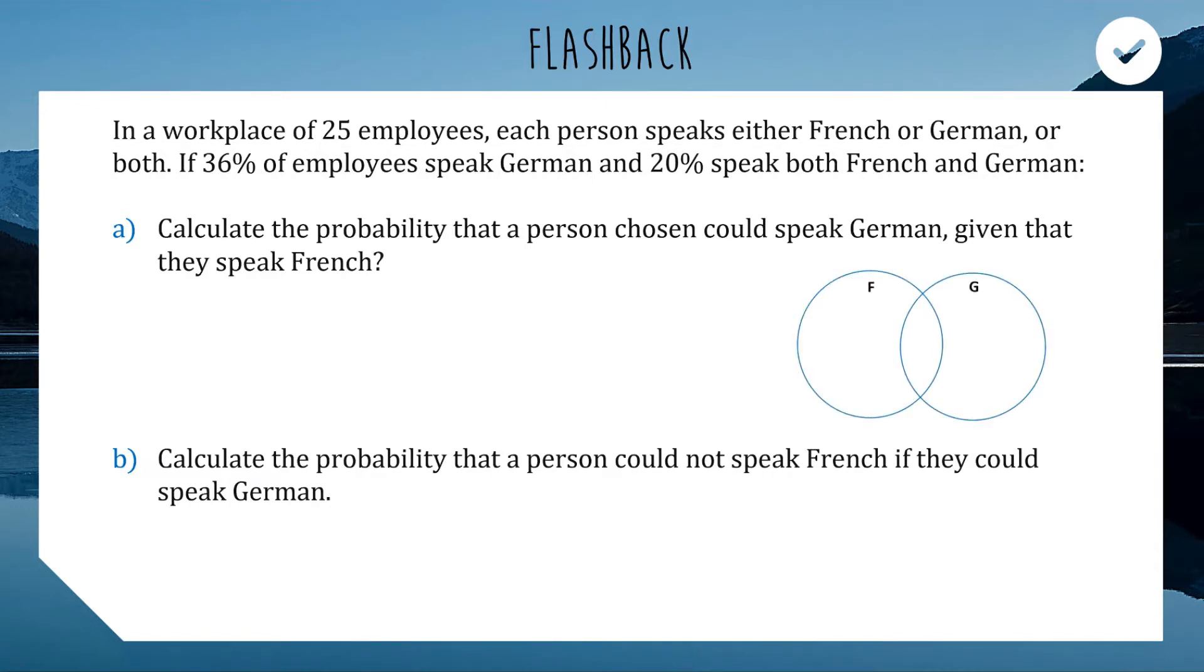So, we're going to have French speakers and German speakers. Now we know that 36% of the employees speak German. So, 36% of 25. Cool little math hack for you. We can work backwards here and we can instead do 25% of 36. So, a quarter is nine. No calculators needed. Now, we also know that 20% speak both French and German. 20% is a fifth. So, a fifth of 25 is going to be five.